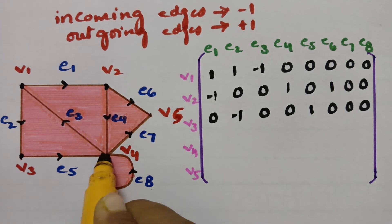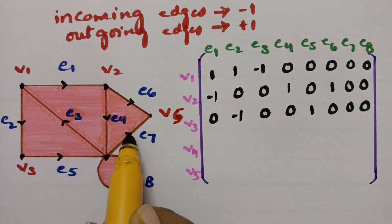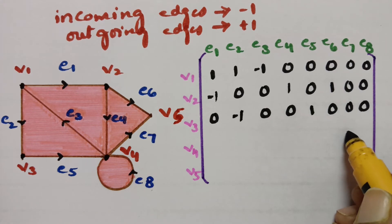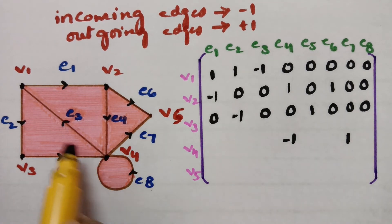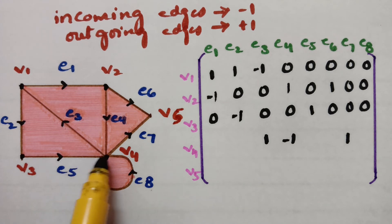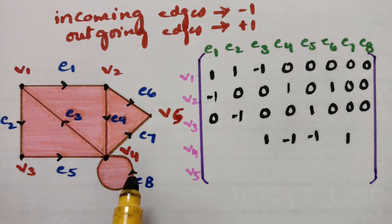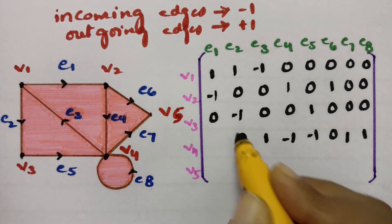Coming to v4, it has 5 edges. e7 is outgoing, so plus 1. e4 is incoming, so minus 1. e3 is outgoing, so plus 1. e5 is incoming towards v4, so minus 1. e8 is outward from v4, so plus 1. Remaining are zeros.